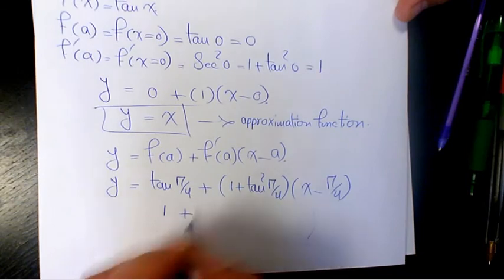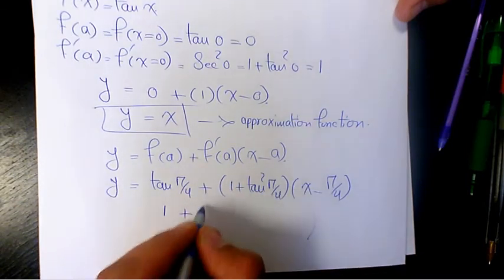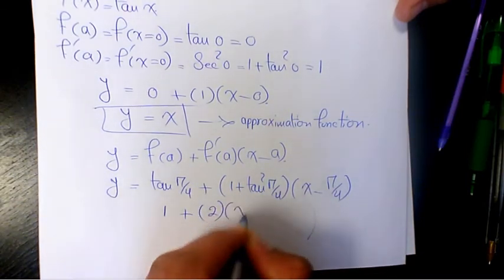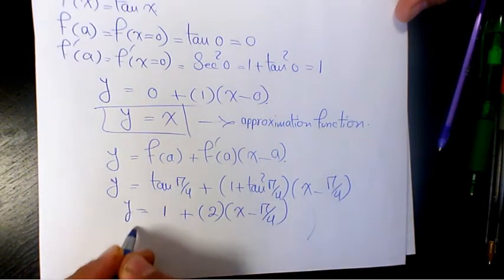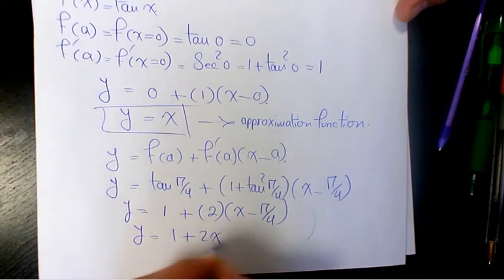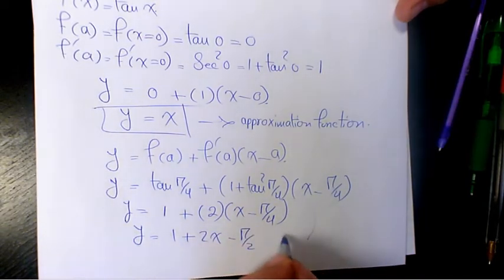tan π/4 is 1, plus 1 plus 1 equals 2, times x minus π/4. So it's going to be y equals 1 plus 2x minus π/2.